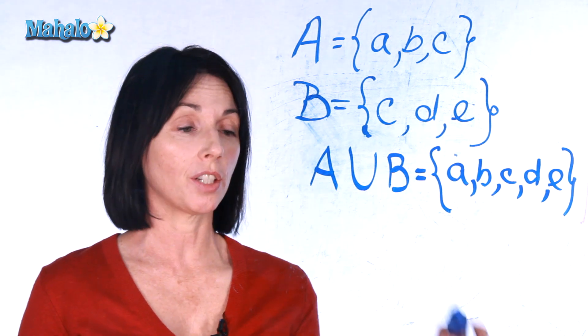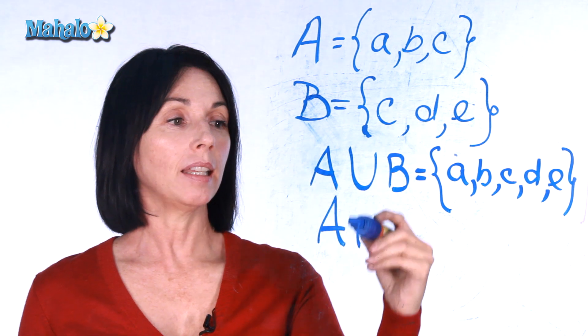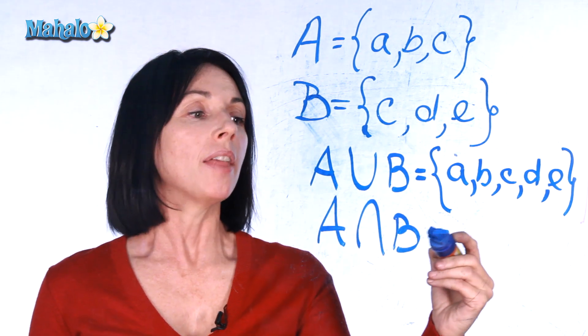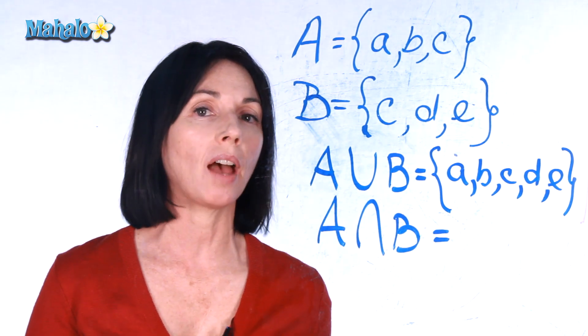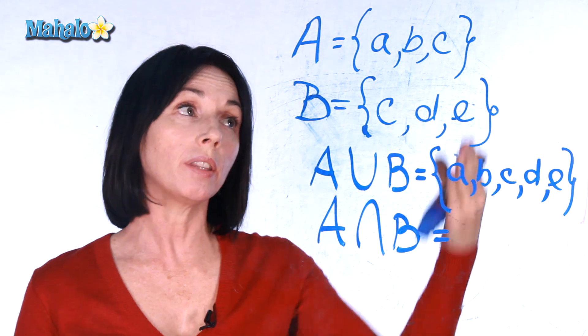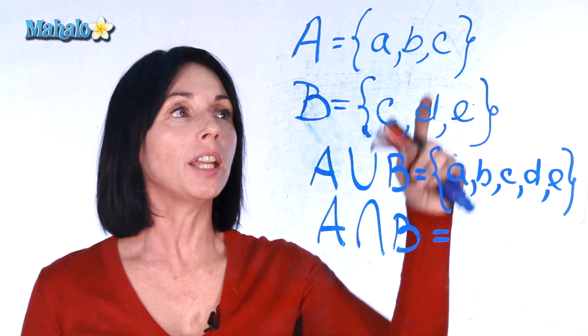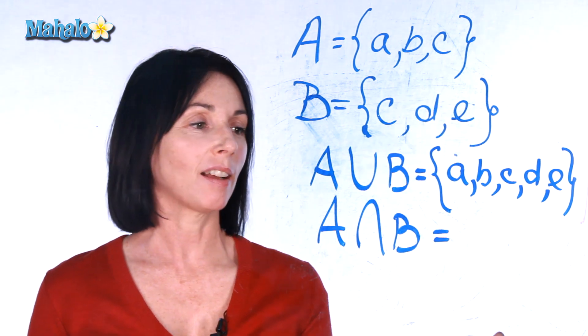Now if we take the intersection of A and B, A intersection B, that means we only take what they have in common. So what do these two sets have in common? They just have the element C in common.